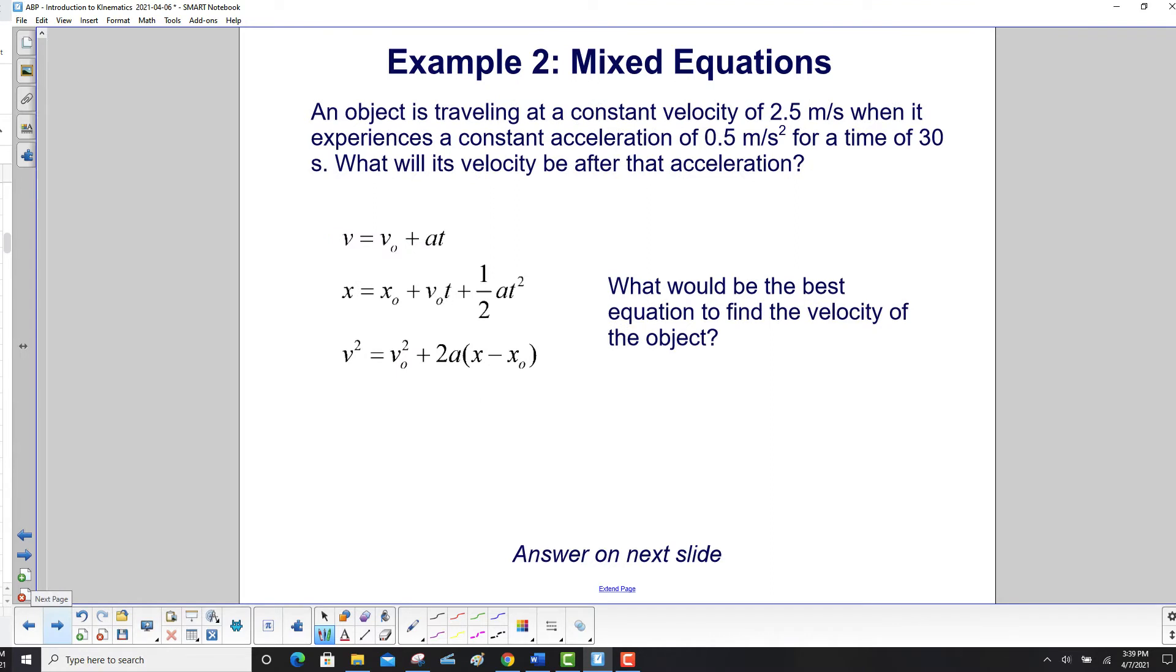Second example. An object is traveling at a constant velocity of 2.5 meters per second when it experiences a constant acceleration of 0.5 meters per second squared for a time of 30 seconds. What will its velocity be after that acceleration? What would be the best equation to find the velocity of the object?